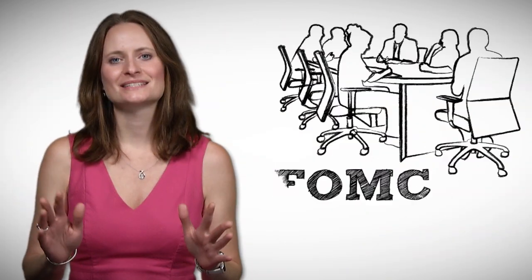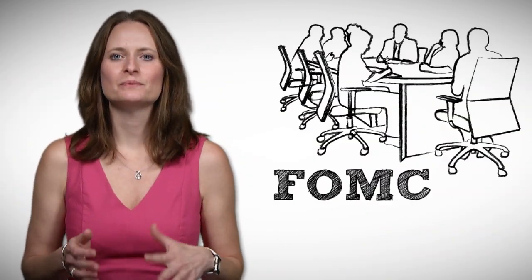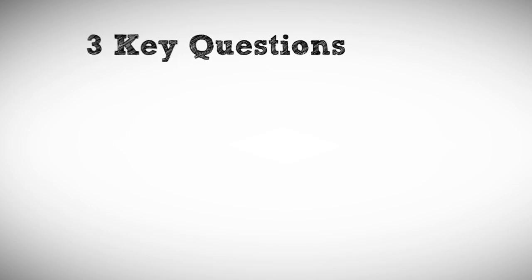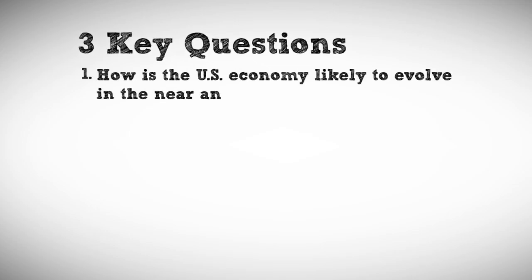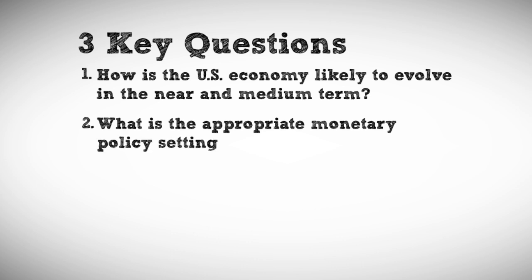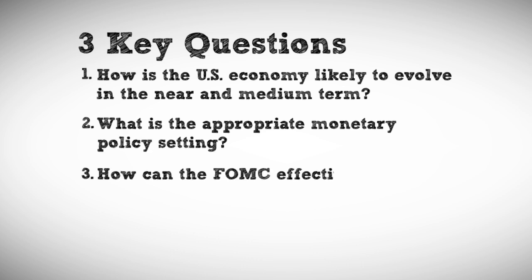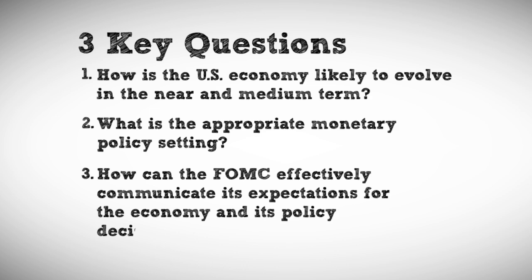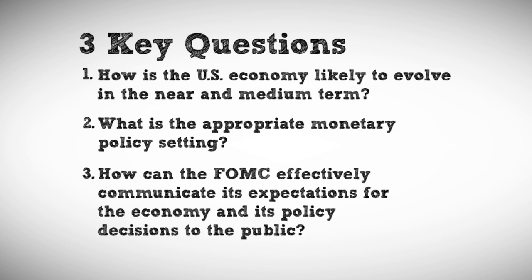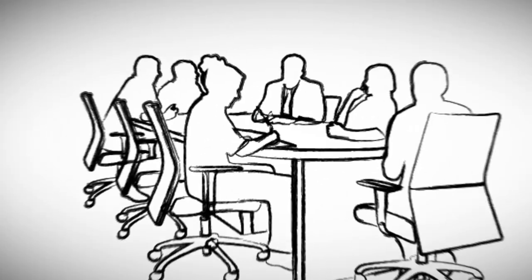At its meetings, the FOMC considers three key questions: How is the U.S. economy likely to evolve in the near and medium term? What is the appropriate monetary policy setting? And how can the FOMC effectively communicate its expectations for the economy and its policy decisions to the public?